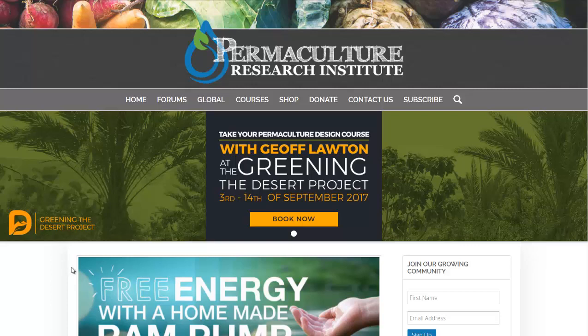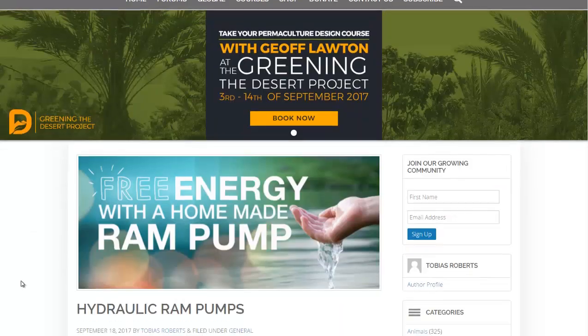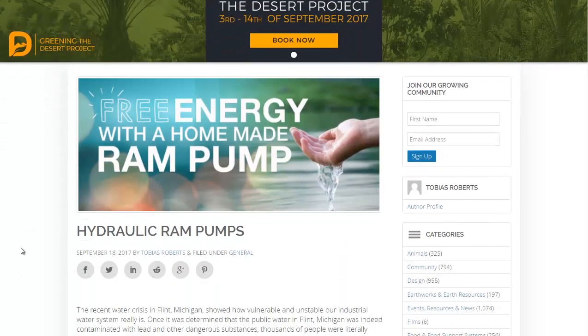Hello, Carl here with Sustainability Theory News. We're over at the Permaculture Research Institute's website and they're talking about ram pumps. We're also going to talk about the spiral pump really quick, but there are two ways you can move water up a hill without using electricity.